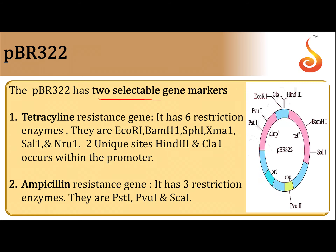pBR322 has two selectable marker genes: tetracycline resistant gene and ampicillin resistant gene. The tetracycline resistant gene has six restriction enzyme sites: EcoR1, BamH1, Sph1, Sma1, Sal1, and NruI.